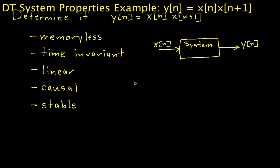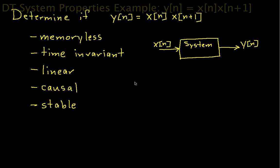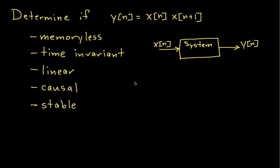Hello and welcome to this video in which we will determine whether or not the discrete system defined by y of n equals x of n times x of n plus 1 is memoryless, time invariant, linear, causal, and stable.